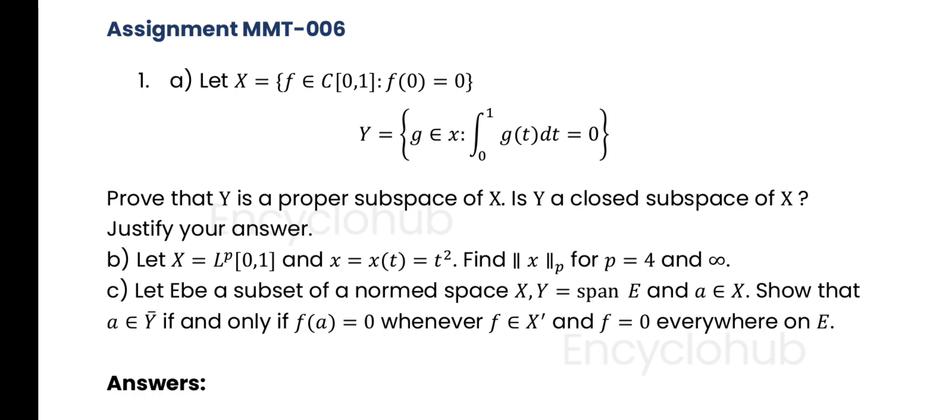Part b: Let X equal to L^p[0,1] and x equal to x(t) = t^2. Find x in L^p for p equals 4 and infinity. Part c: Let E be a subset of a normed space X, Y equals span E, and a element of X. Show that a element of Y bar if and only if f(a) = 0 whenever f is element of X' and f = 0 everywhere on E.